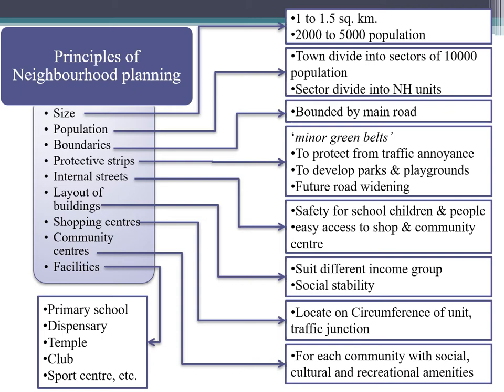The next principle is the layout of the buildings. In the neighborhood unit, there is total gathering and blending of population. So in the layout, each and every kind of building should be present to serve all income groups — lower income group housing, middle income group housing, as well as higher and double higher income group housing. This gives social stability so that in one area of 1 to 1.5 square kilometers, each income group can stay and benefit from the neighborhood.